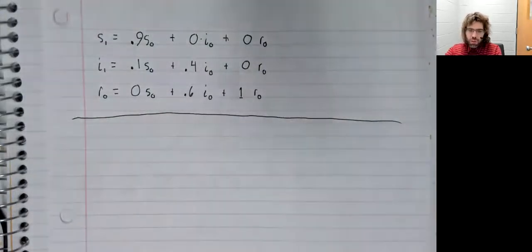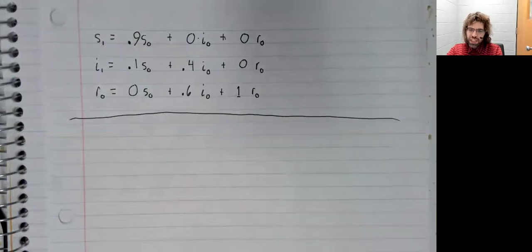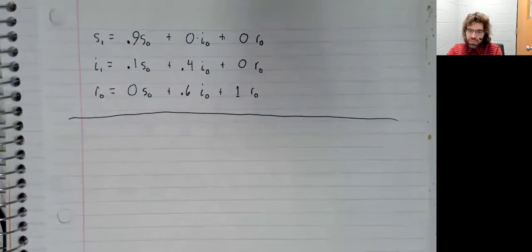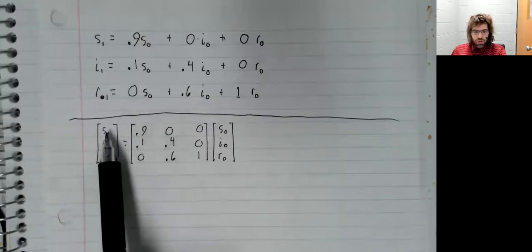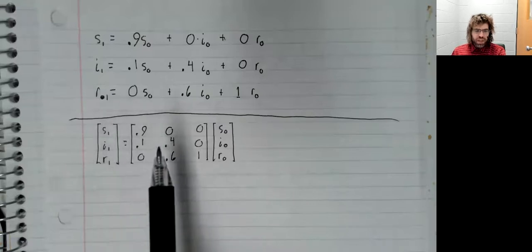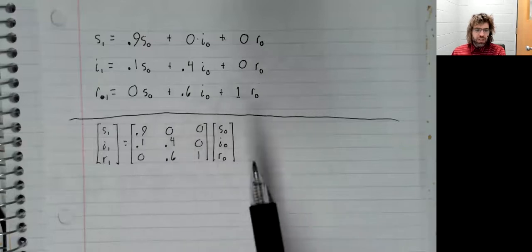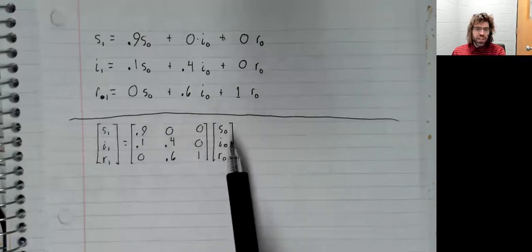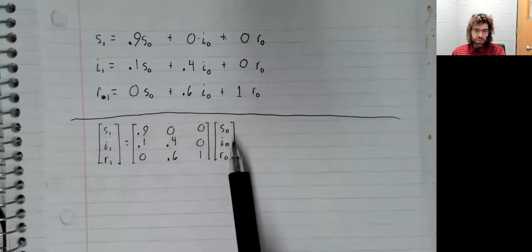This system of equations can be rewritten as a matrix equation: the vector of probabilities after one transition is a matrix times the initial vector of probabilities.